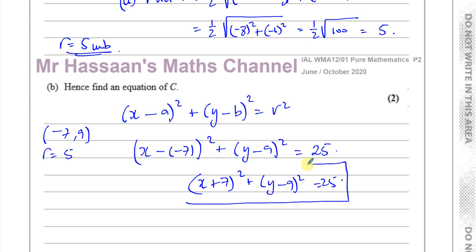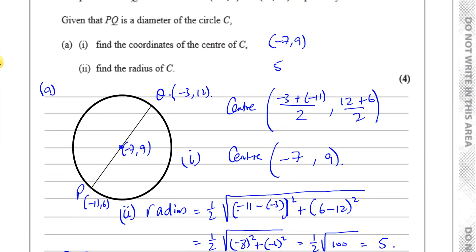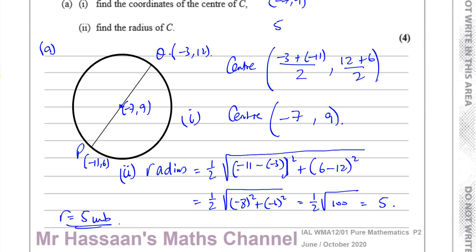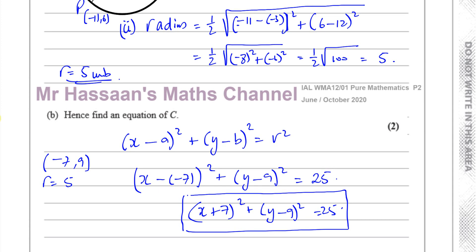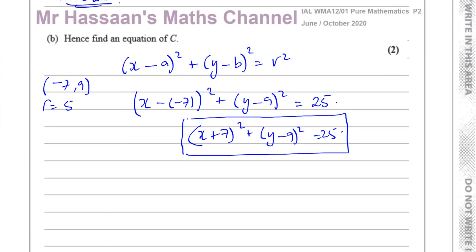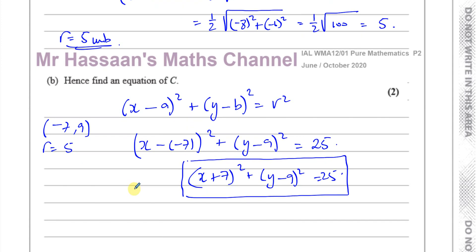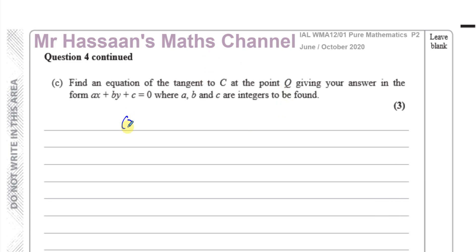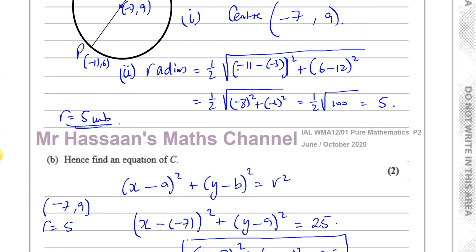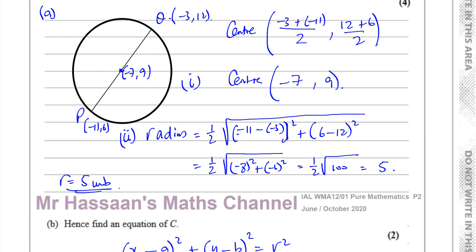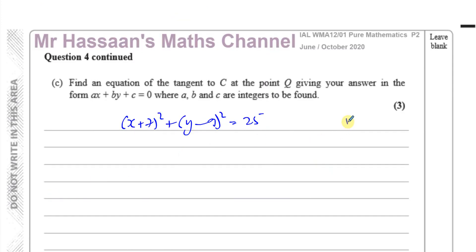There we have the equation of the circle — a pretty straightforward question. We found the coordinates of the center minus 7, 9, then we found the radius as 5, and then the equation of C. So we have x plus 7 squared, plus y minus 9 squared, equals 25, with center minus 7, 9 and radius equal to 5.